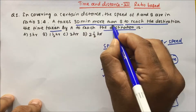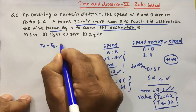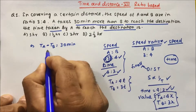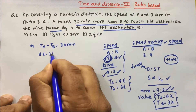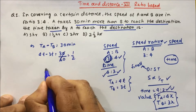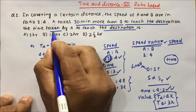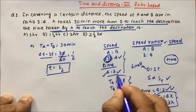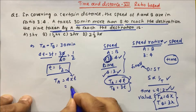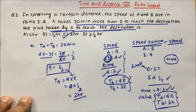A takes 30 minutes more than B, meaning time of A minus time of B = 30 minutes. So 4t minus 3t = 30 minutes. Converting to hours, divide by 60, so t = 1/2. They are asking the time taken by A to reach the destination, so time of A = 4t = 4 × 1/2 = 2 hours. So our answer is 2 hours.